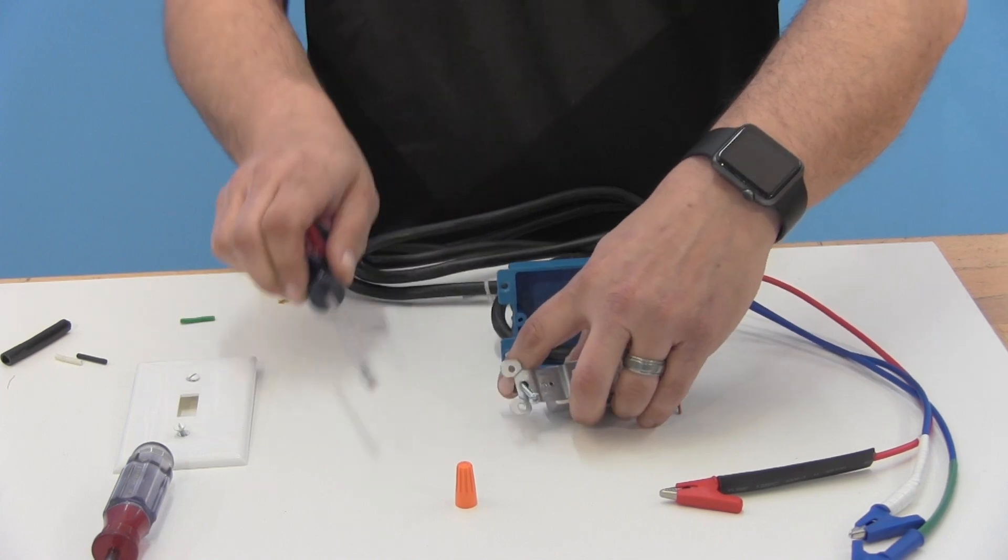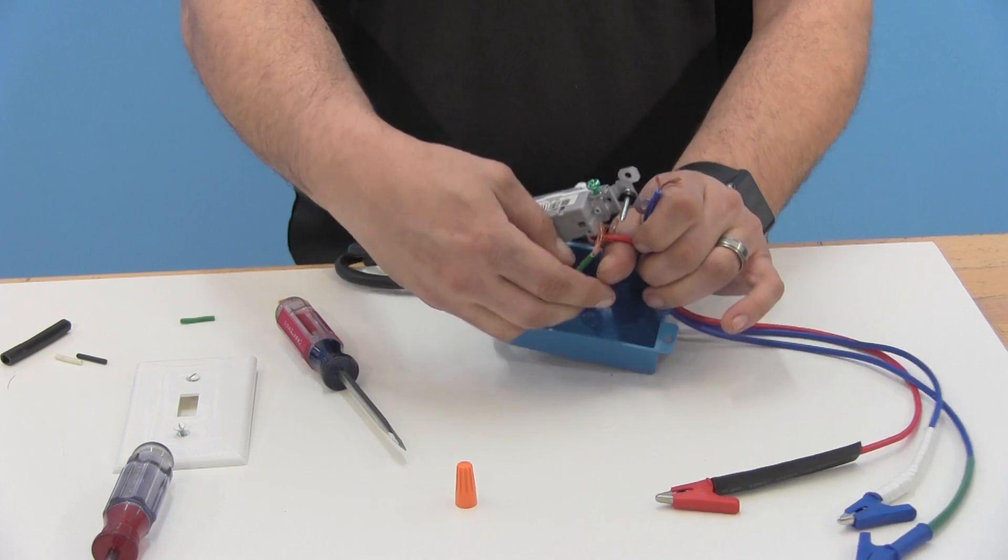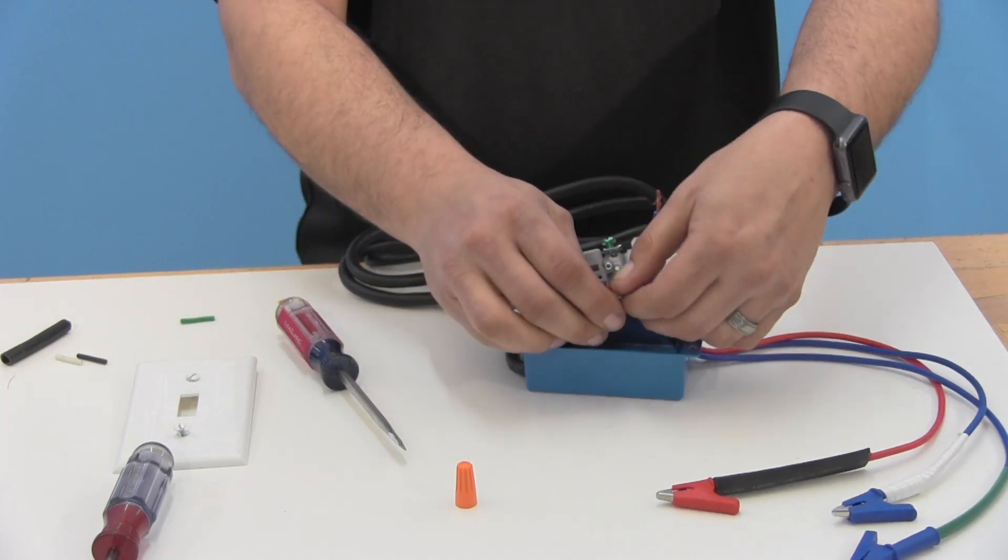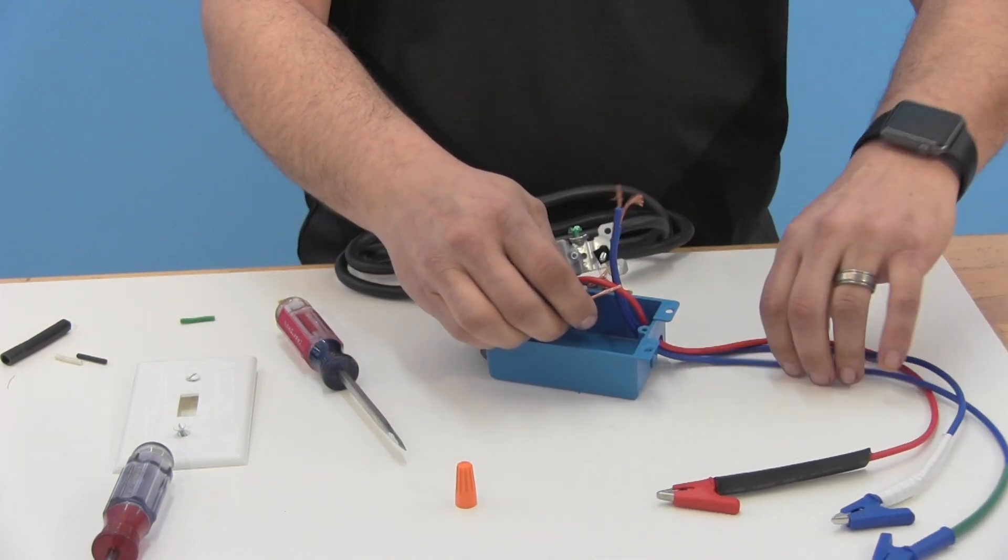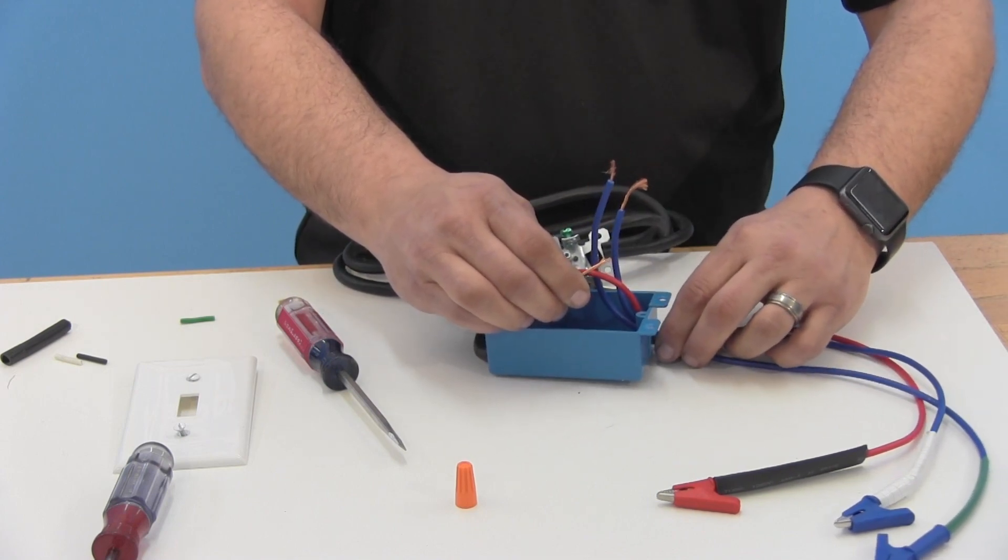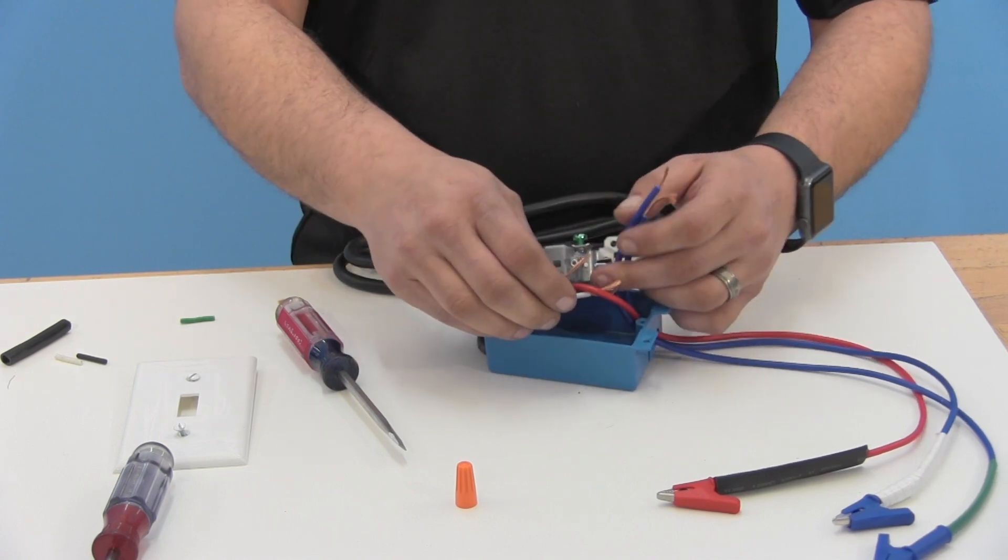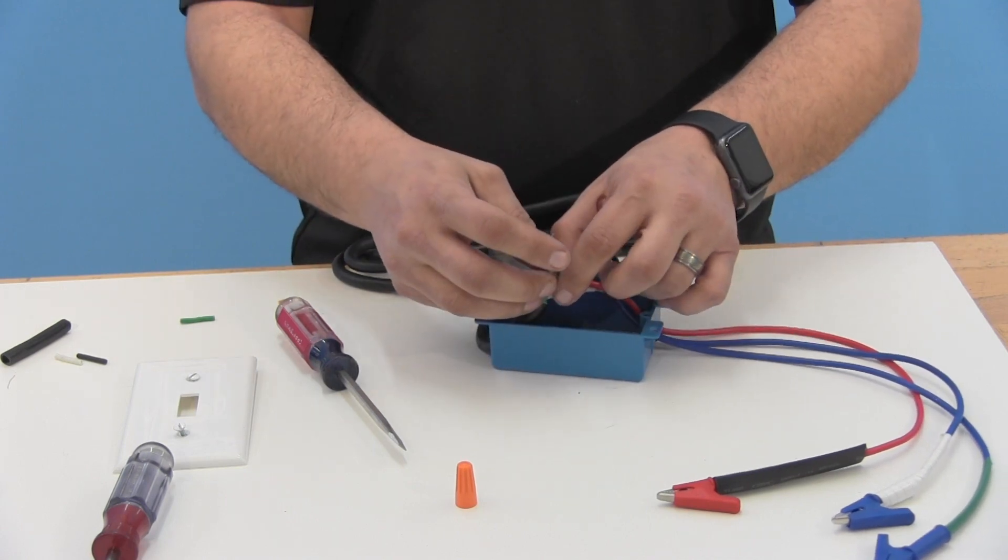We're going to take our green off of our cord and then we're going to find the green from our alligator leads here and we're going to combine those together. So you can just push these up and then down to find which one's moving. And you can twist those together.